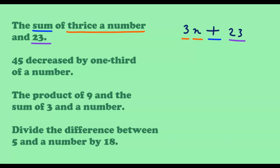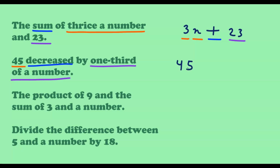Next, '45 decreased by one third of a number.' We have 45, and it is decreased by one third of a number, so we subtract. Using m to represent the number, we end up with 45 minus one third times m, written as 45 minus m over 3.